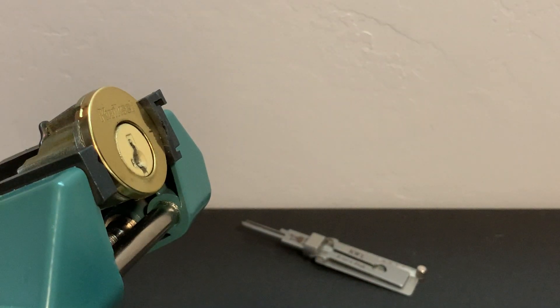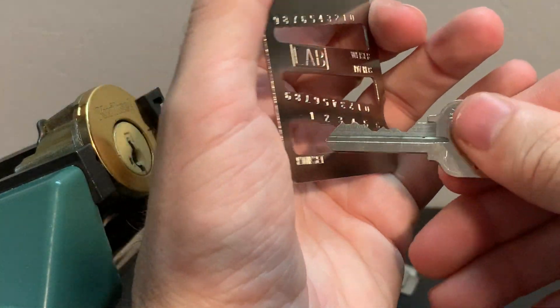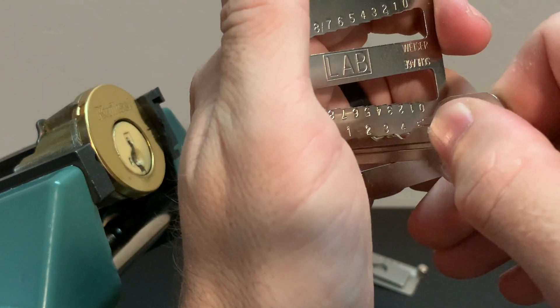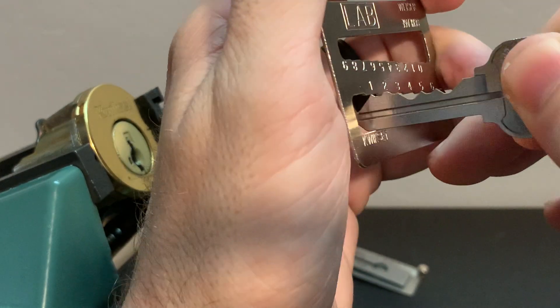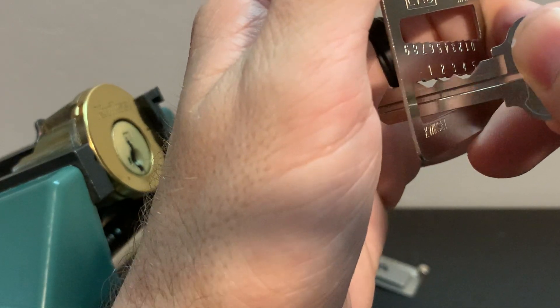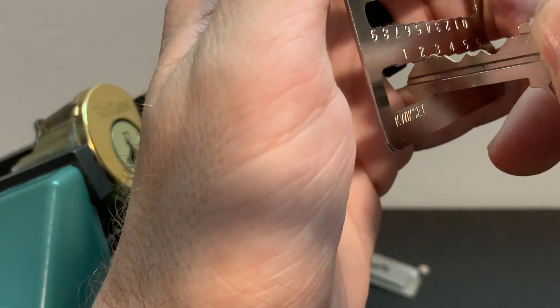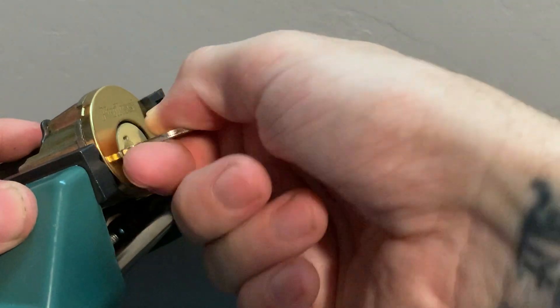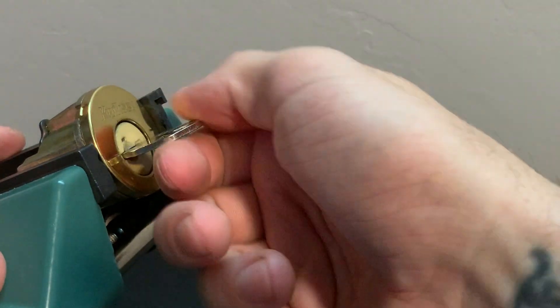Now, I have already went ahead and code cut this key for you guys to save time for this video. And I have a key gauge here. So we're going to measure these so you guys can see it. That is a 5, 4, 5... sorry, doing this on camera here is a little difficult... 2 and 2. So 5, 4, 5, 2, 2. We'll insert him into our smart lock here. And we have now cut ourselves a key to just go ahead and jump right into this lock.